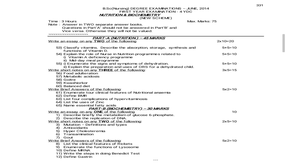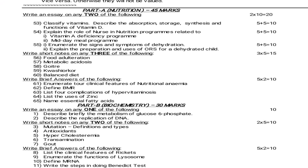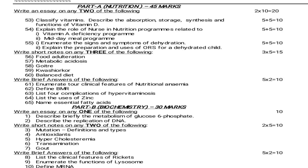Next is June 2014 question paper. Part A is Nutrition and Part B is Biochemistry. In Part A essay questions: Classify vitamins — describe the absorption, storage, synthesis and functions of vitamin D. Explain the role of nurse in nutritional programs related to vitamin A deficiency program and midday meal program. Enumerate the signs and symptoms of dehydration and explain the preparation and uses of ORS for a dehydrated child. Short notes: Food adulteration. Metabolic acidosis. Goiter. Kwashiorkor. Balanced diet. 2 marks questions: Enumerate 4 clinical features of nutritional anemia. Define BMR. List 4 complications of hypervitaminosis. List the uses of zinc. Name essential fatty acids.